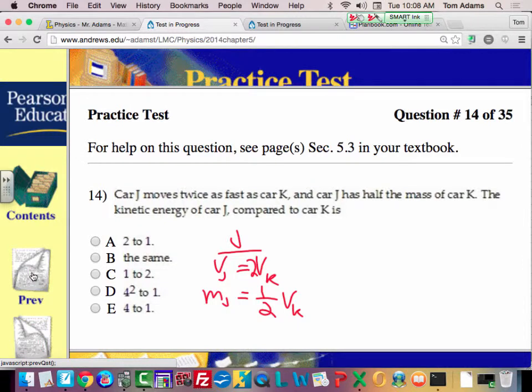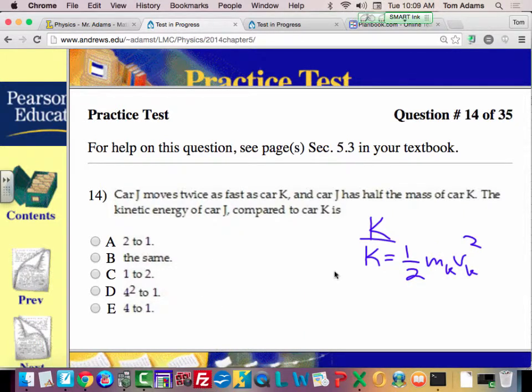So now we're going to write down K, its kinetic energy is equal to one half times the mass of K times the velocity of K squared.